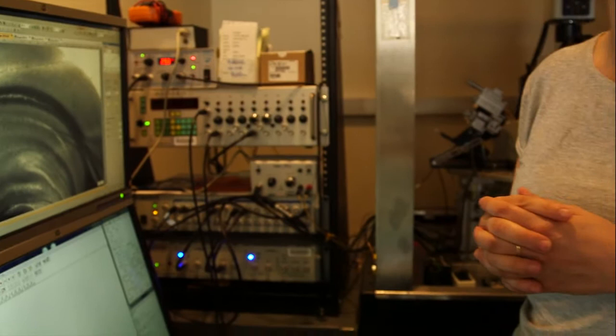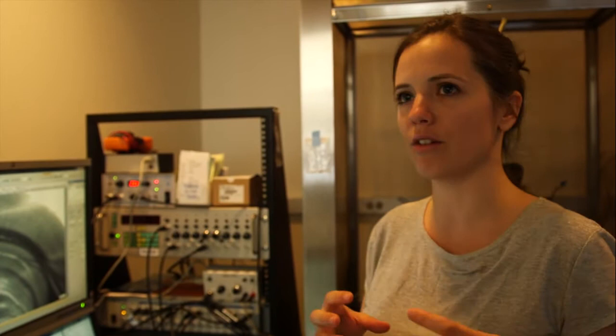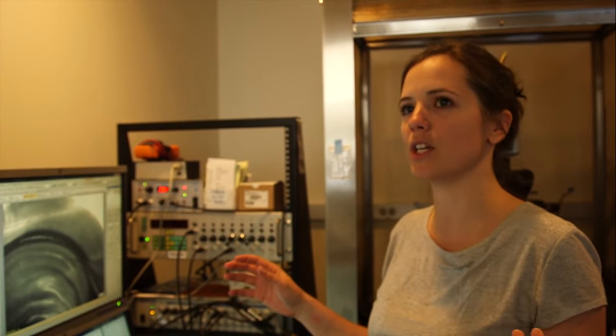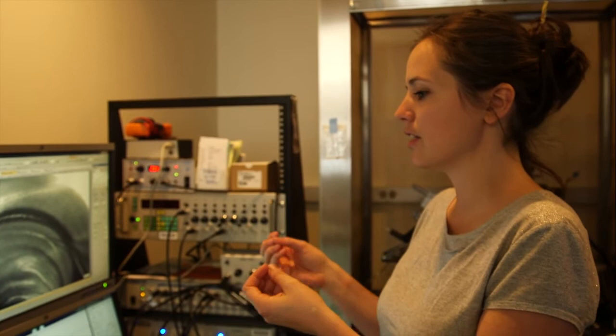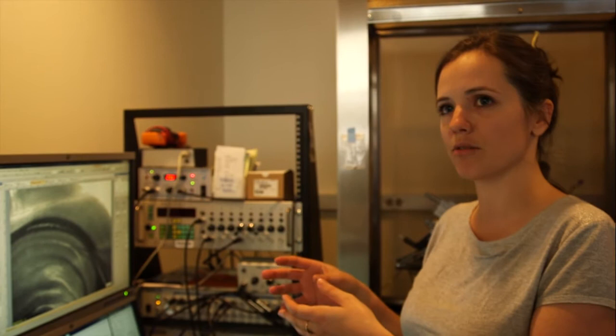And channelrhodopsin is a channel that lets positive ions go through. And if you shine light on it, it's going to open so you can trigger currents. So we express this channelrhodopsin in the amygdala neurons and we are going to record from postsynaptic cells in the ventral hippocampus. And if you shine light in the ventral hippocampus, the terminals coming from the amygdala to the ventral hippocampus contains channelrhodopsin and are going to let calcium and sodium in. And then this is going to trigger synaptic release and you can record postsynaptic currents through that. In 2005, I guess, was the first application of optogenetics to neurons. And essentially what optogenetics is, is the application of these genetically encodable proteins that are light sensitive.